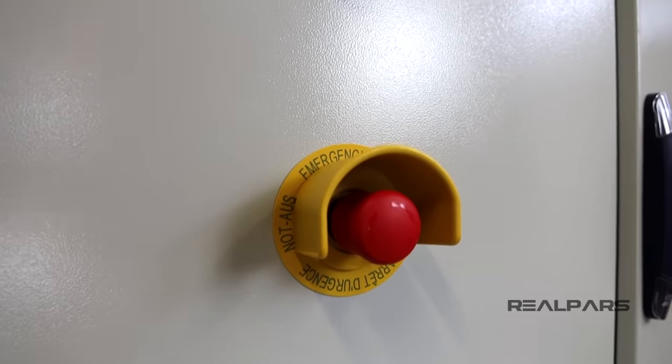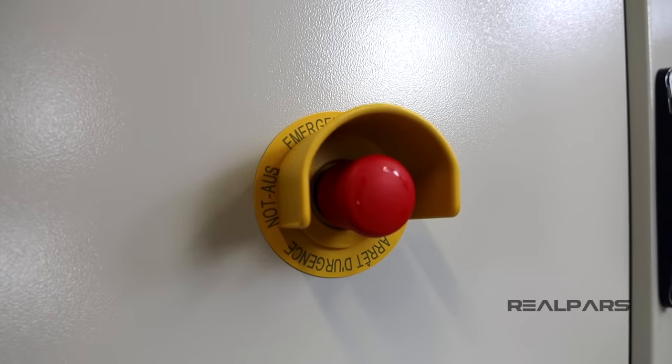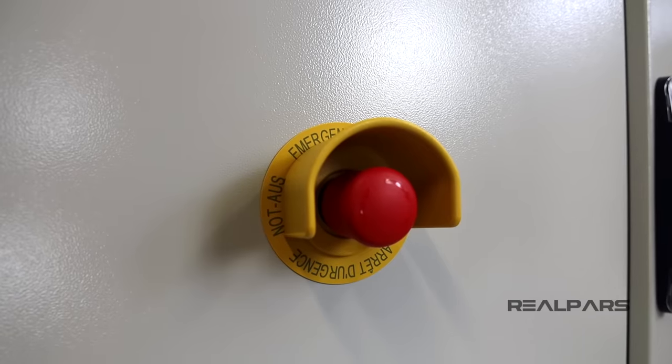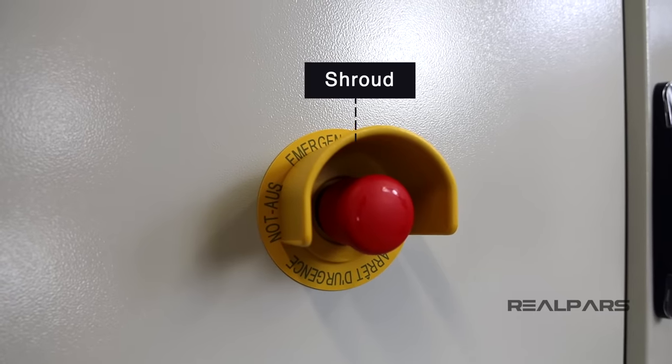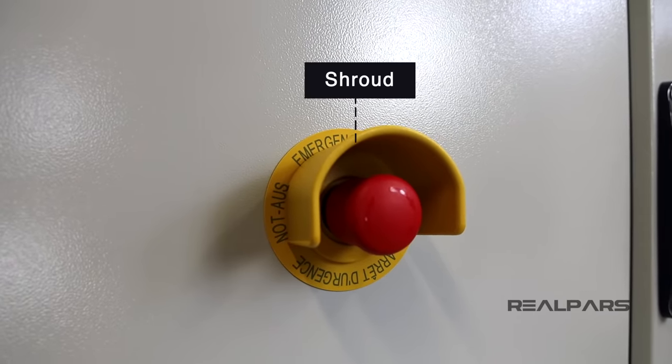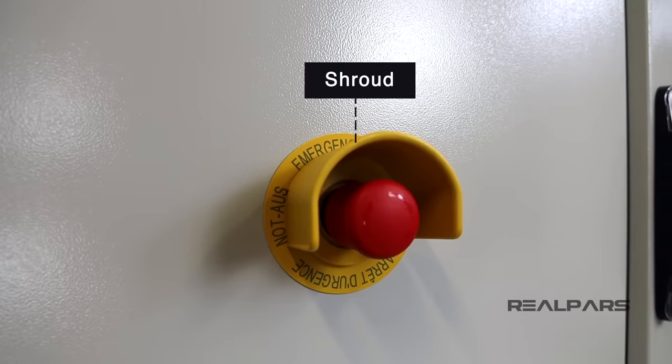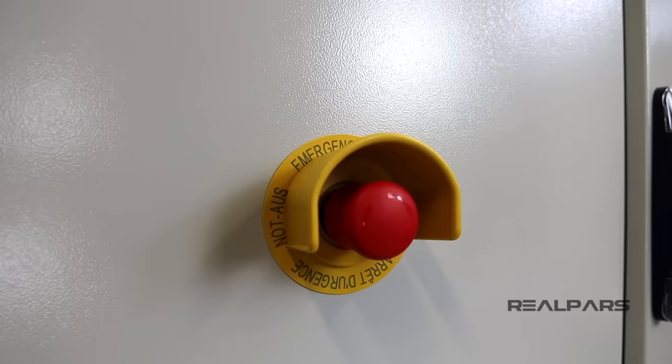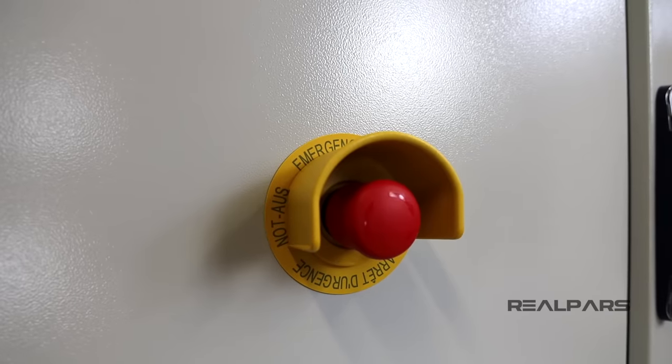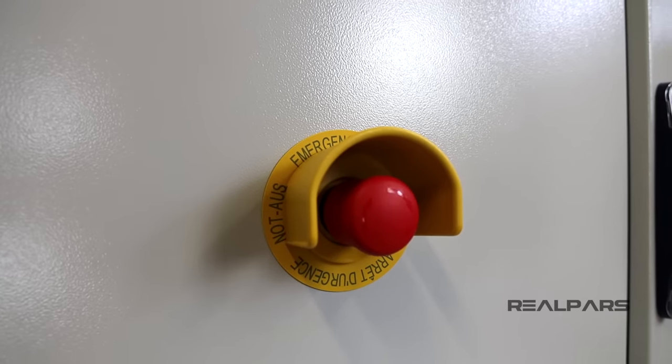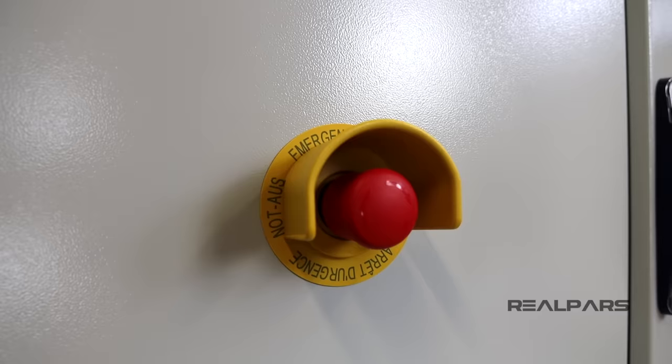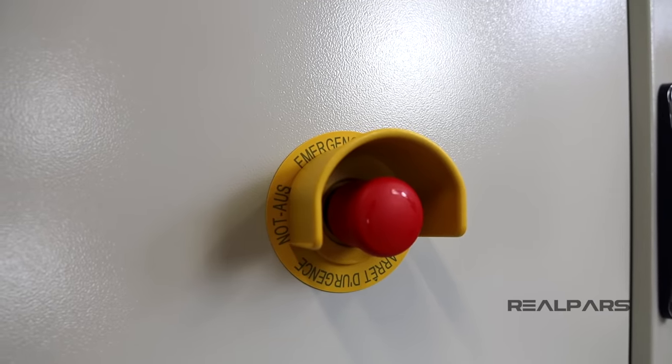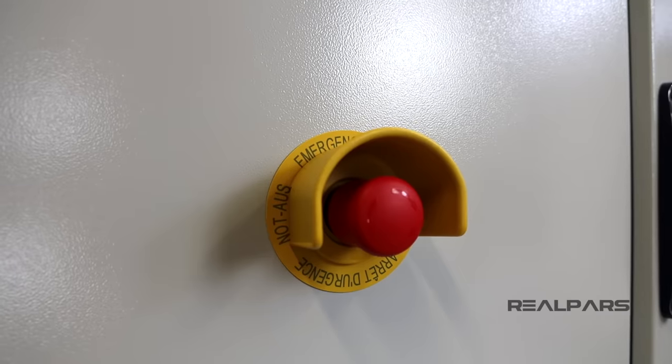As you can see, it has some guarding around it, called a shroud. This will prevent the button from being used unintentionally. Emergency stop devices are always close to where people work in order to be useful, but we have this shroud around it to prevent any unwanted use. Why? Because if someone presses this button unintentionally, the whole system will be shut down completely.